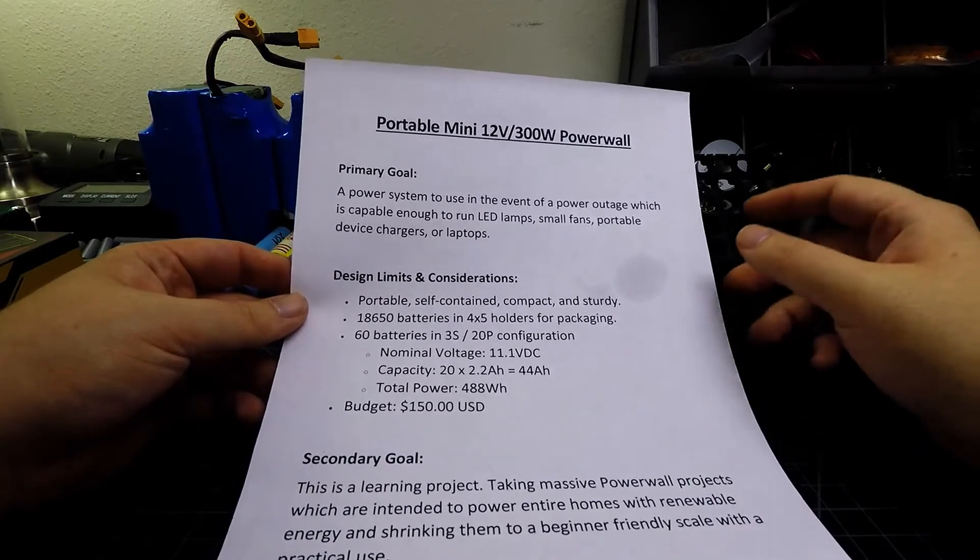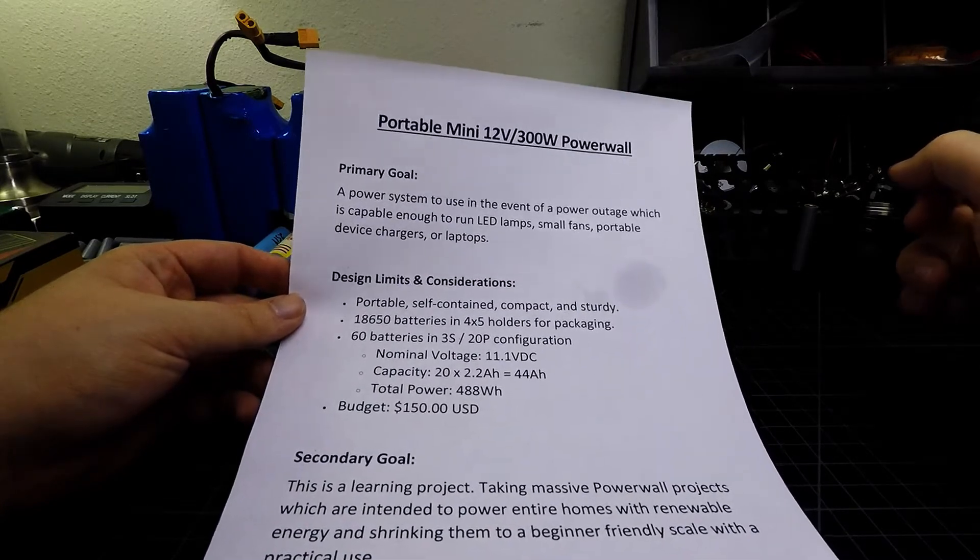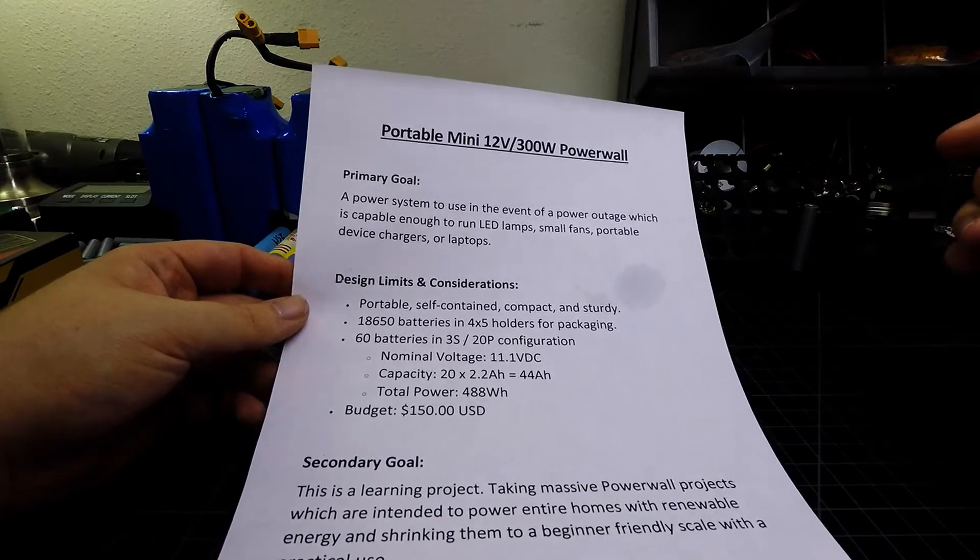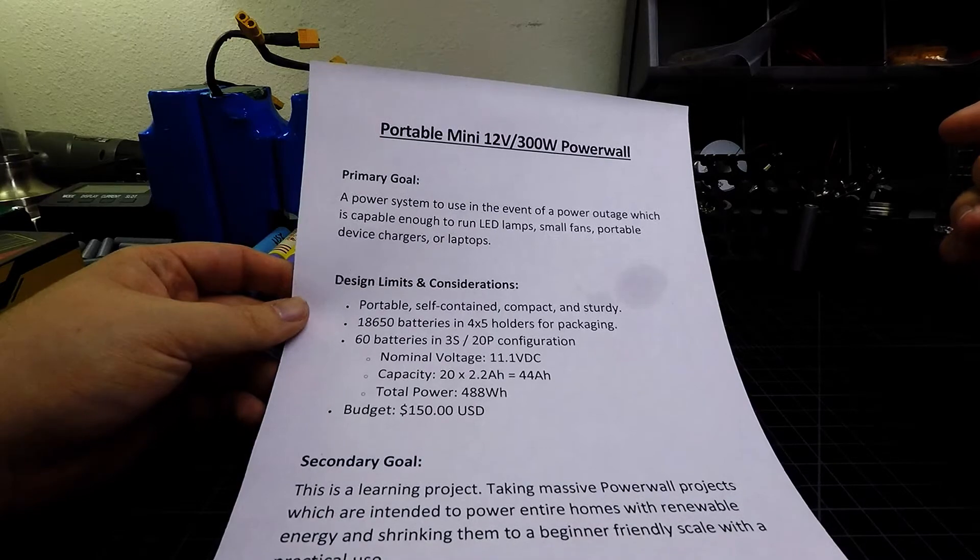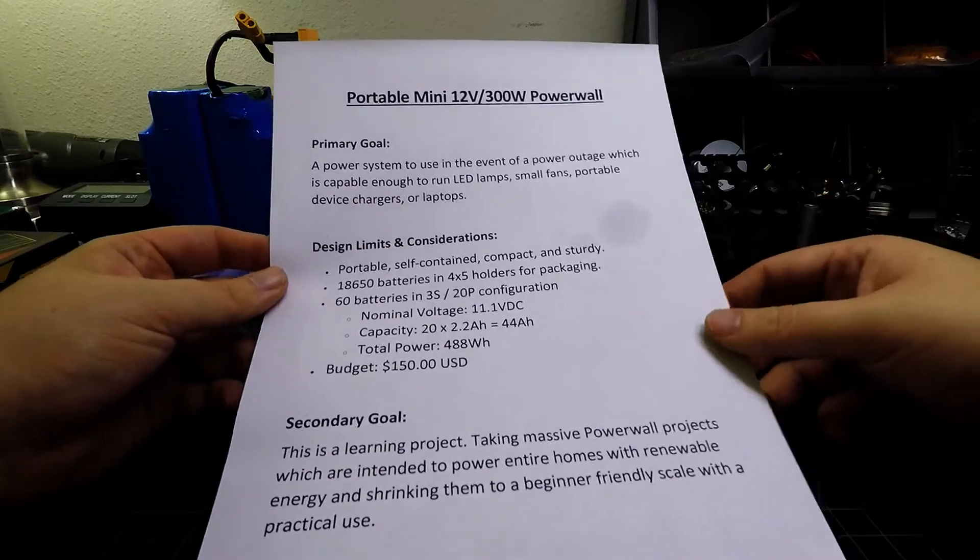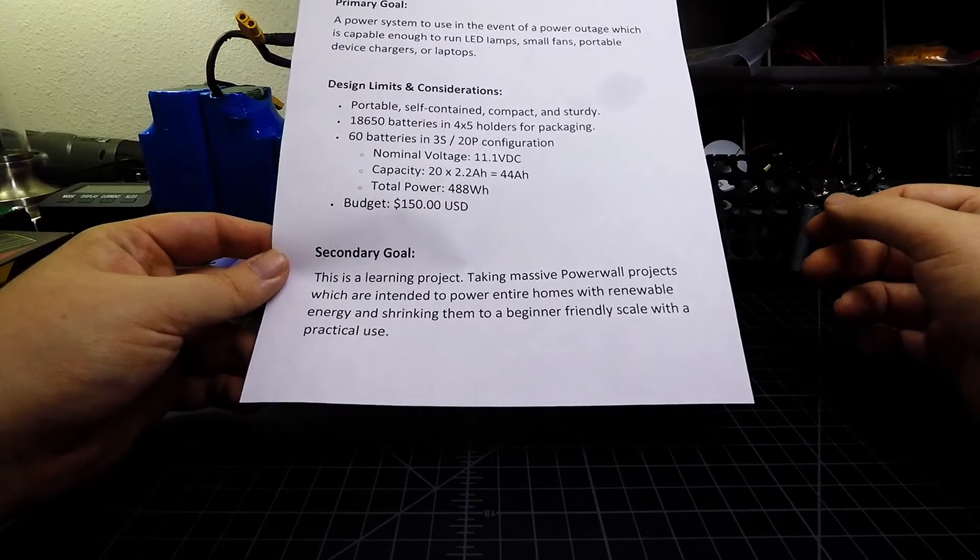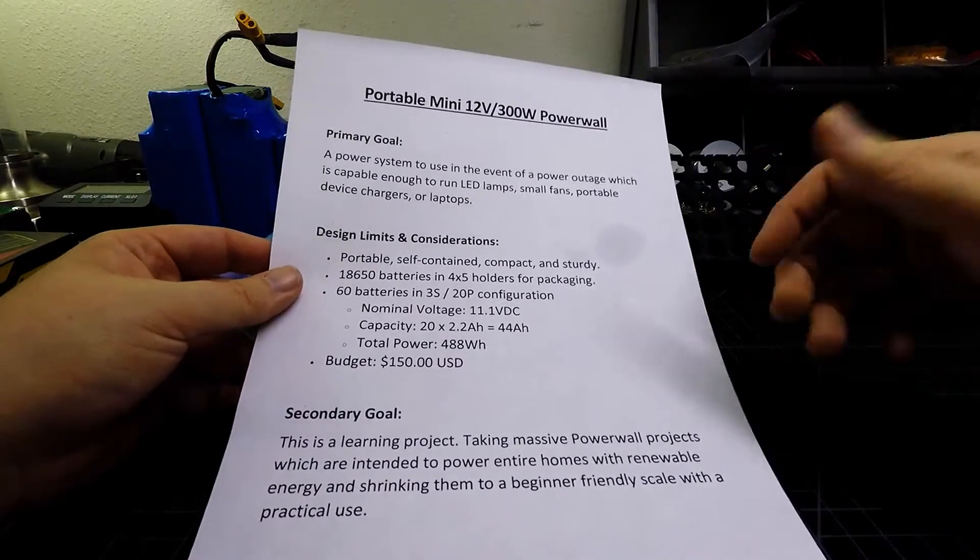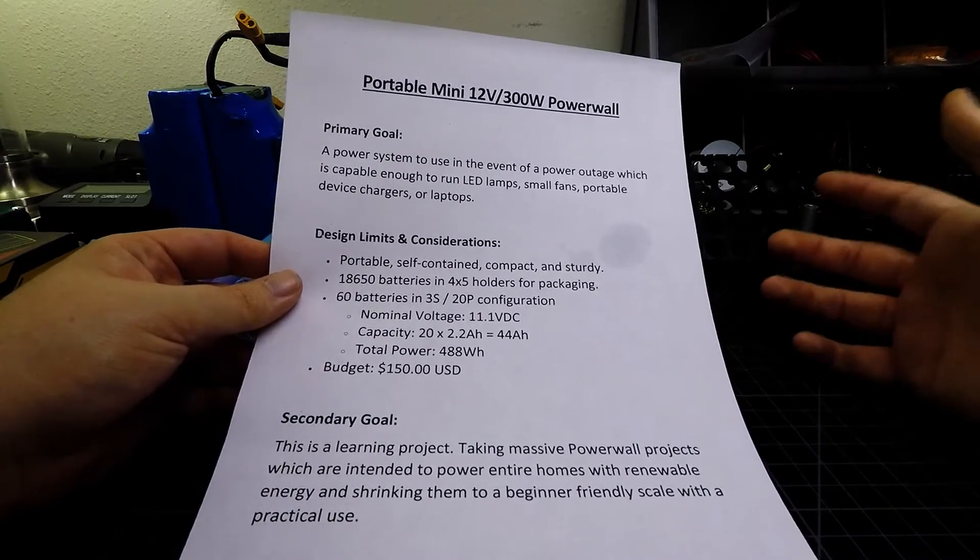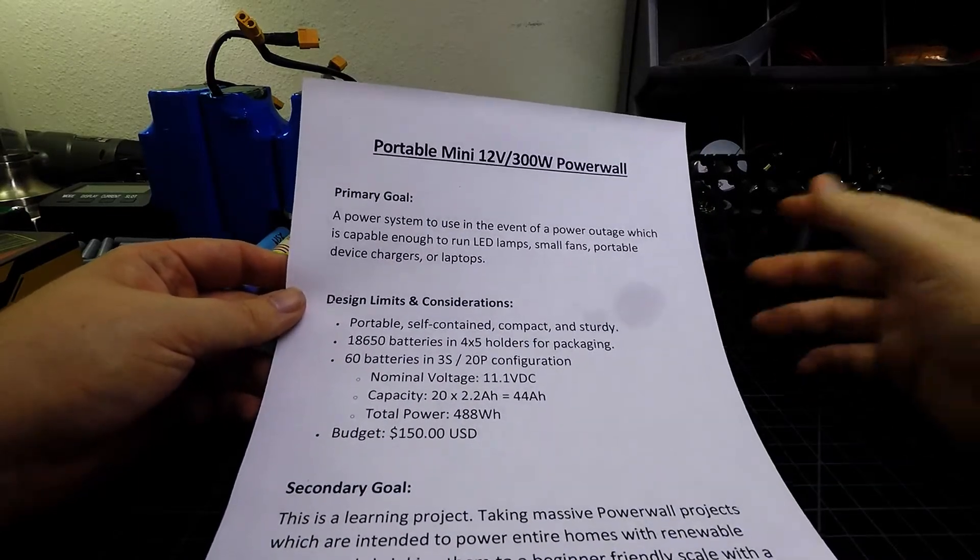Now we will be using the 18650 batteries and 4x5 holders for packaging purposes. I felt like this was a good solution because it provides a medium for allowing a compact brick of sorts for the batteries itself, but also because again this is intended to scale up to larger massive power wall projects. This is the same format that those projects tend to use when they use the 18650 batteries, so we're trying to keep as much similarity between this mini project and things that scale up over time.